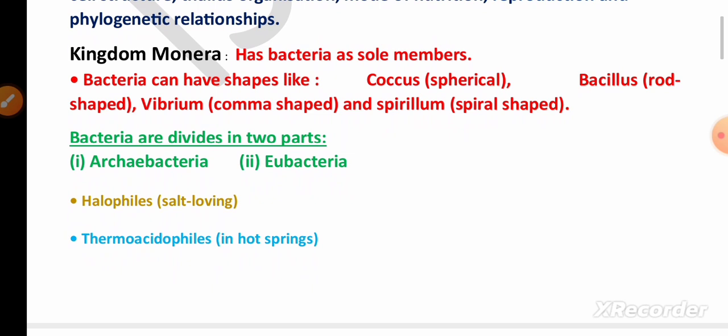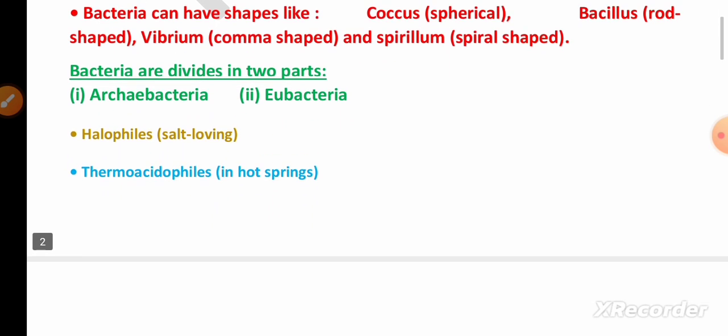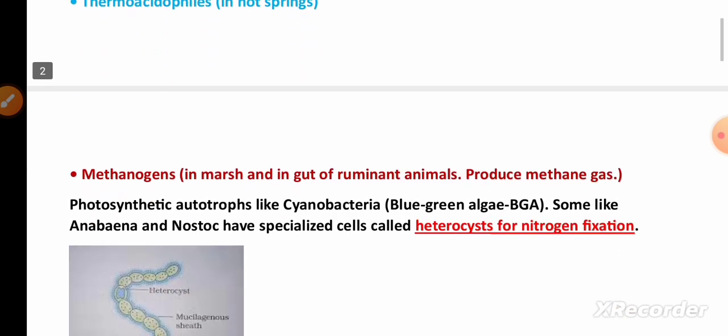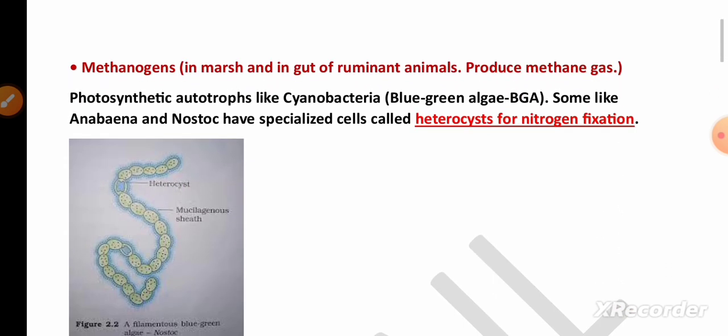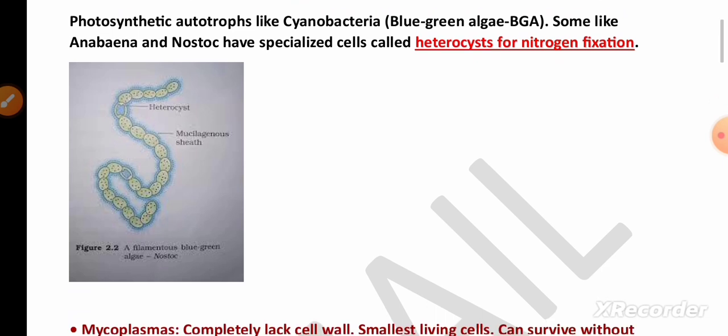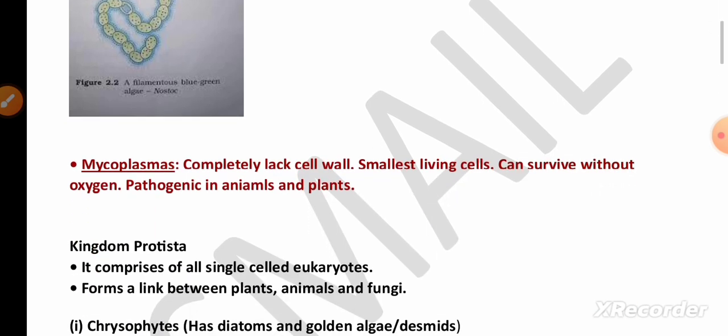In Kingdom Monera, remember the classification of bacteria based on shape, and the definitions of archaebacteria, halophiles, and thermoacidophiles. Also remember methanogen bacteria and cyanobacteria (blue-green algae). One important diagram here is Nostoc — remember the function of heterocyst.